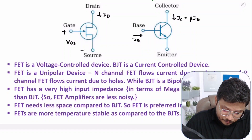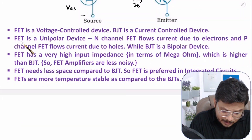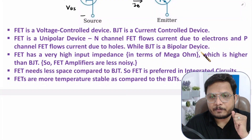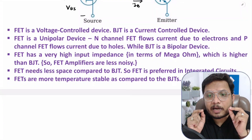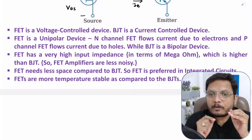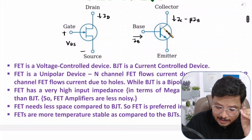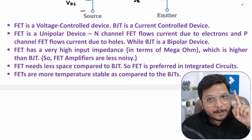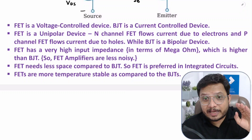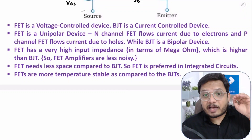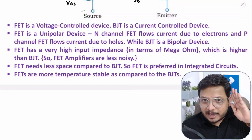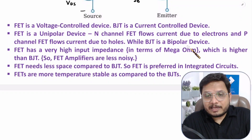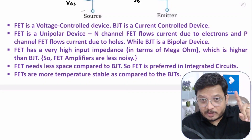Now let us talk about polarity. FET is a unipolar device and BJT is a bipolar device. With BJT, current flows due to both majority and minority carriers. In an NPN transistor, majority carriers are electrons and minority carriers are holes. So BJT current flows due to both electrons and holes, which is why it is called a bipolar device — current flows due to both polarities.